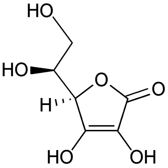Substances that have the ability to oxidize other substances — causing them to lose electrons — are said to be oxidative or oxidizing and are known as oxidizing agents, oxidants, or oxidizers. That is, the oxidant removes electrons from another substance, and is thus itself reduced. And, because it accepts electrons, the oxidizing agent is also called an electron acceptor.